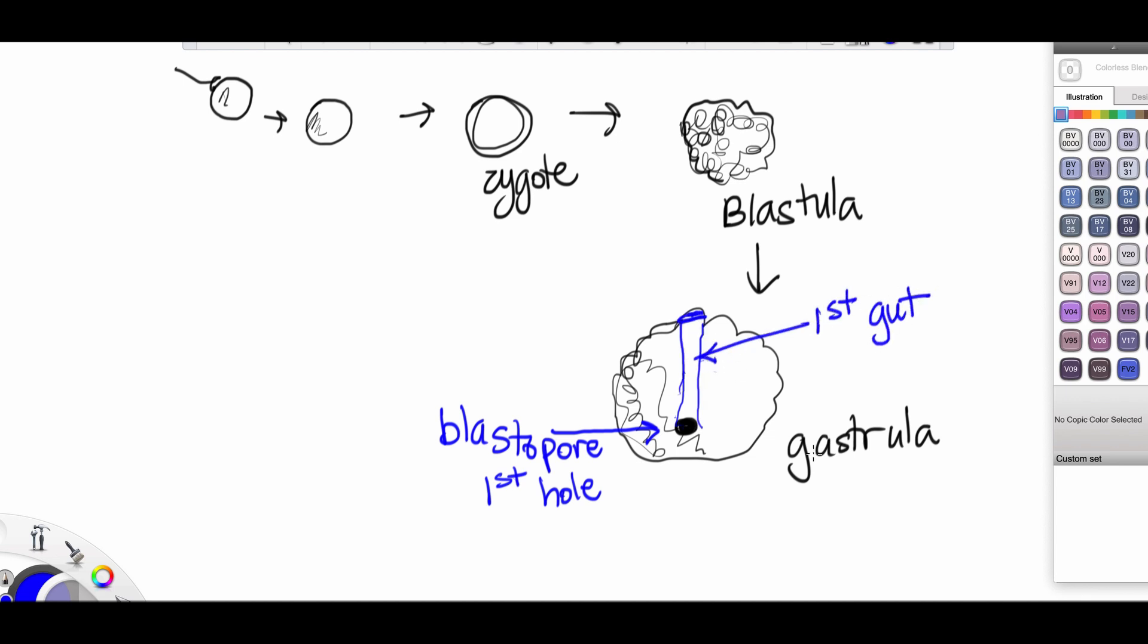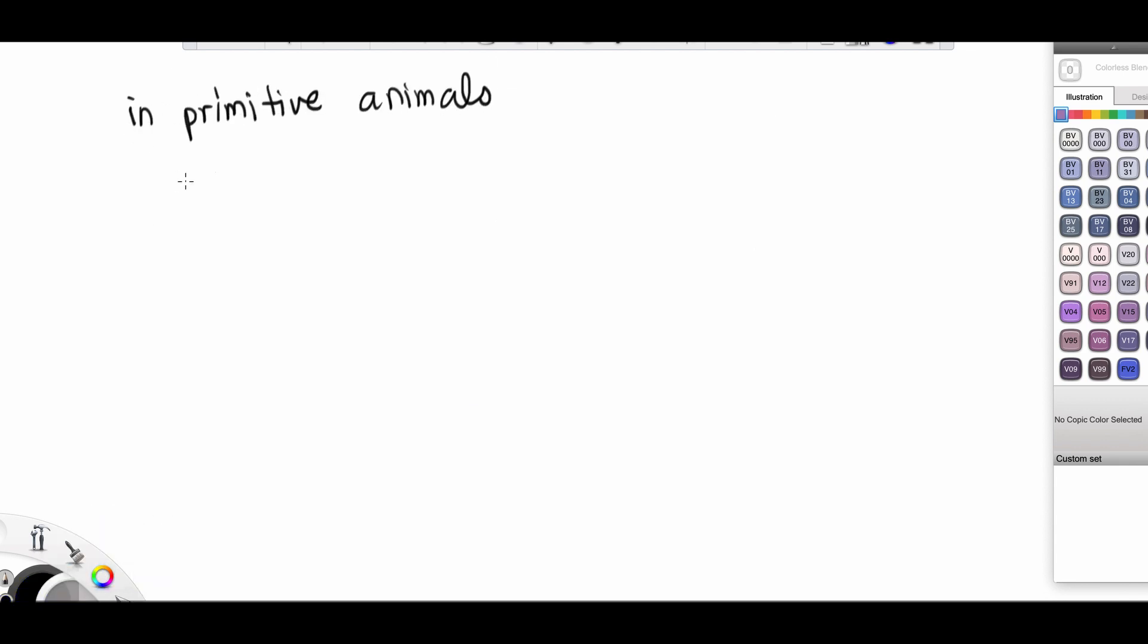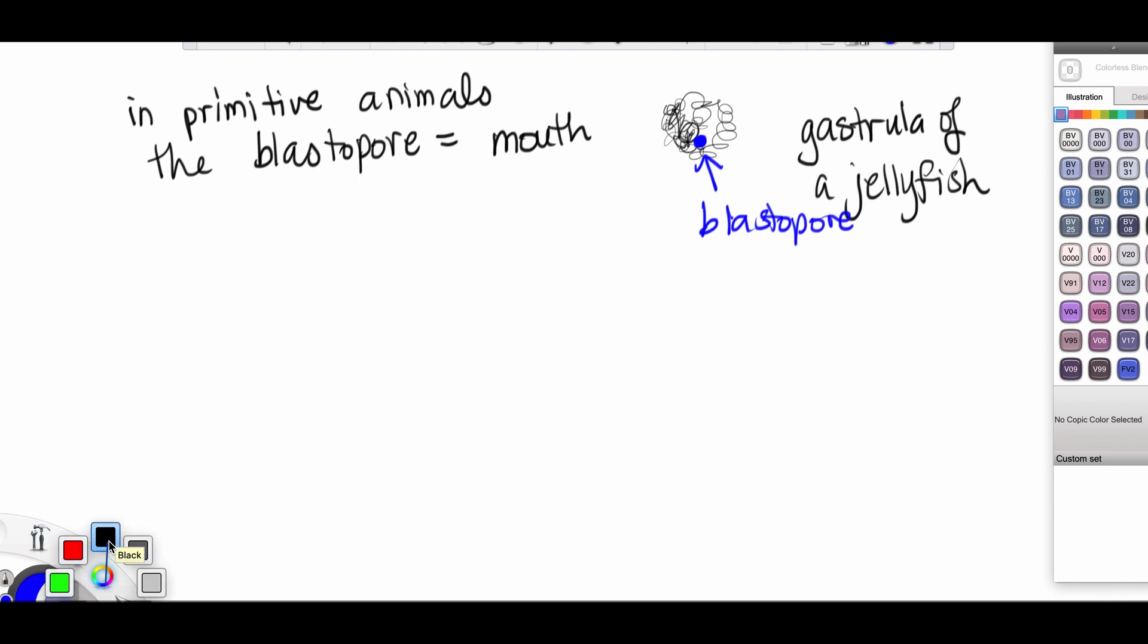That blastopore is the beginning of the gut or the digestive tract of any animal. In primitive animals, the blastopore turns into the mouth of the animal. The gastrula of a jellyfish has a blastopore, which eventually turns into the jellyfish's mouth. And that mouth is very interesting because its job is to take in food and also to excrete it. A jellyfish has no anus.